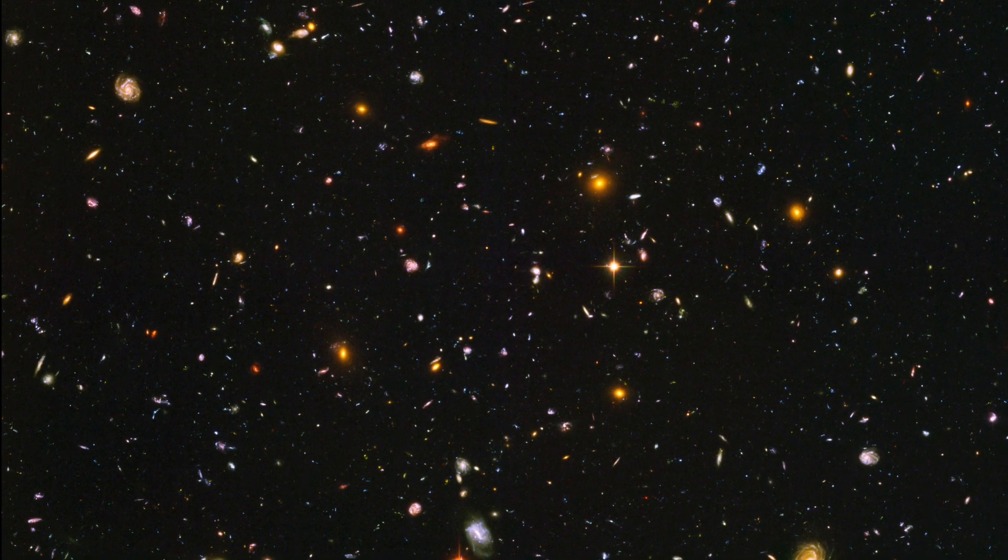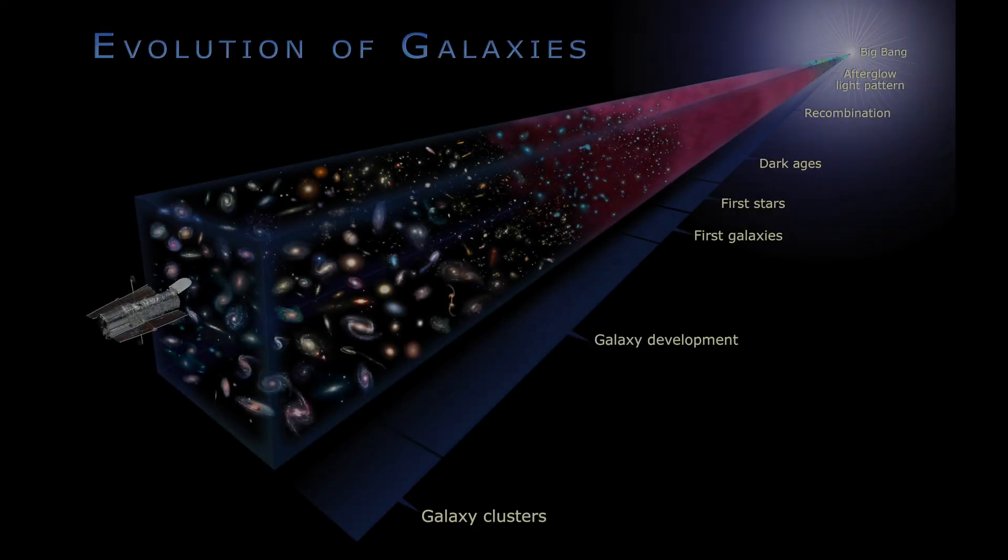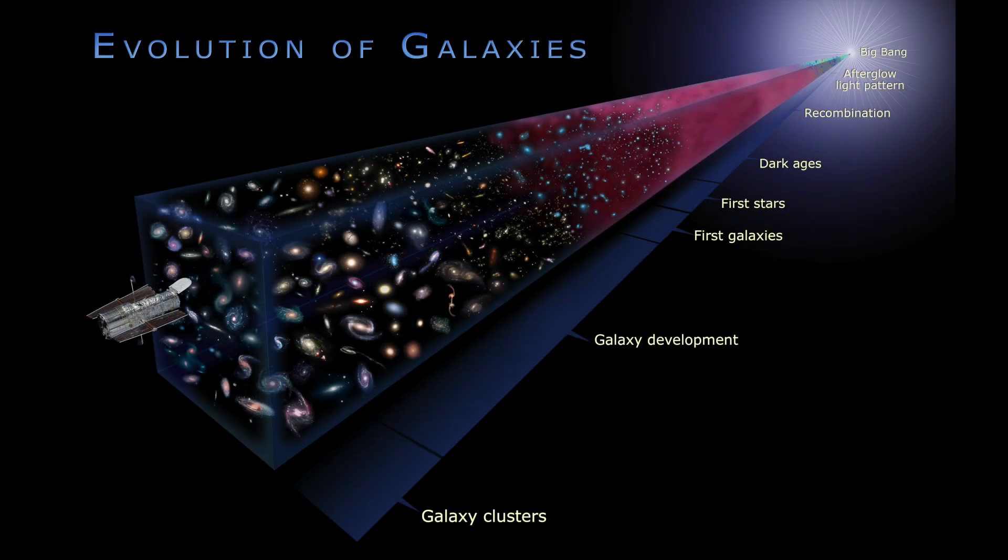This image is called the Hubble Ultra Deep Field, and it showed a mix of spiral, elliptical, and irregular galaxies, each reflecting a different stage in history, showing how galaxies have changed over time.